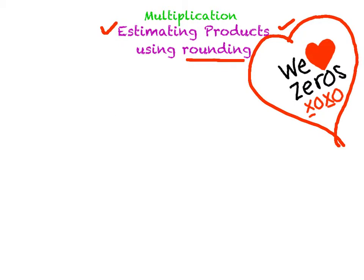So we have — we love zeros. When we multiply, we like to round all our numbers to get as many zeros as we can in the number.